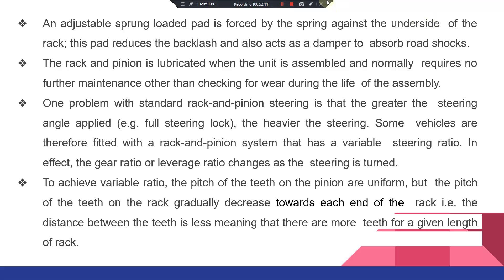One feature of rack and pinion is that greater steering angle applied makes steering heavier. Some vehicles use a variable rack and pinion with variable steering ratio — the pitch of teeth on the pinion is uniform but on the rack the teeth gradually decrease in spacing toward the ends, giving more teeth per unit length at the rack ends, producing a variable steering ratio and lighter steering.